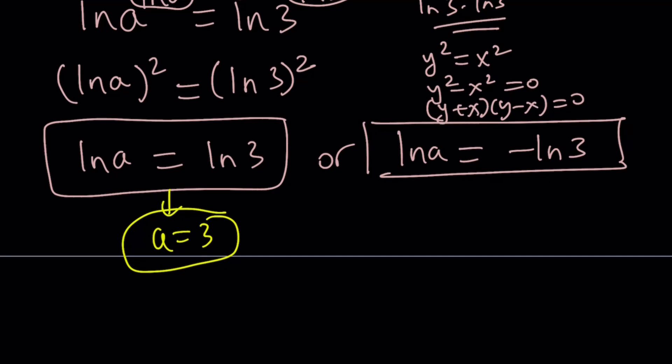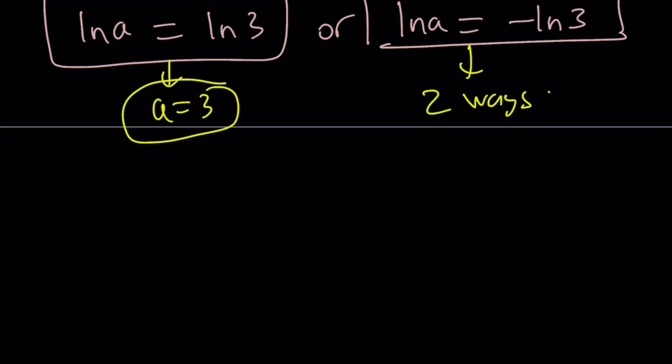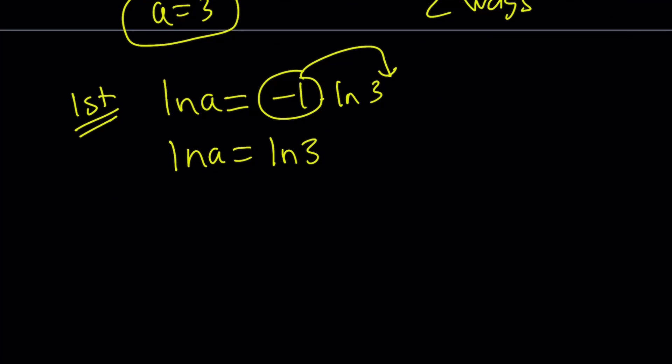Now, there are two ways to go about this. I'm going to present both methods. So, the first method is going to be the following. I'm going to write the negative as negative 1 times ln 3 and then just move this over here. And it's going to look like ln a equals ln 3 to the power negative 1. Now, if ln something equals ln something else, then those things are equal. a equals 3 to the power negative 1. And from here, you can write it as 1 third.